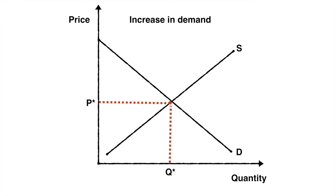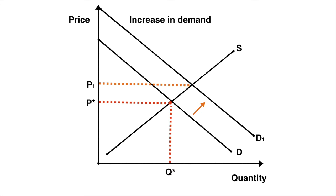Suppose the demand for a product rises due to a successful marketing campaign. Once the demand curve shifts right, the equilibrium price and quantity both increase. We apply the same logic to deduce the new consumer surplus and consider the area above the new market price and below the new demand curve to find our new consumer surplus.